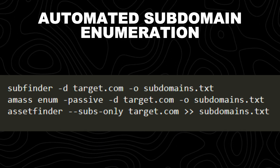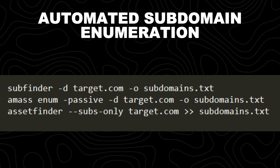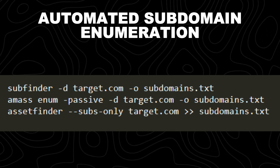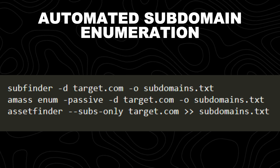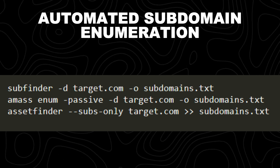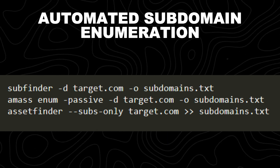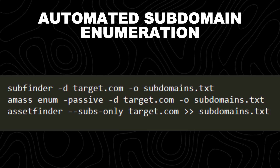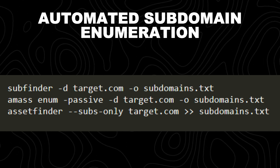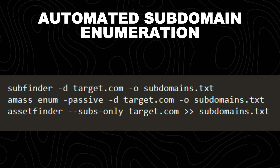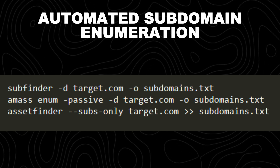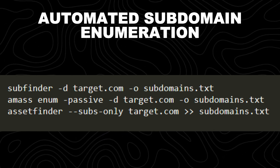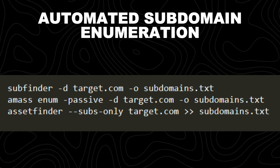Subfinder queries various public sources such as SSL certificates, APIs, and search engines to find subdomains quickly. The -d flag specifies the domain to scan and -o saves the discovered subdomains to a file. Amass enum passive performs passive reconnaissance, meaning it doesn't send direct requests to the target but instead gathers data from OSINT sources. AssetFinder with --subs-only fetches subdomains using sources like CertSpotter, HackerTarget, and Facebook Certificate Transparency Logs.